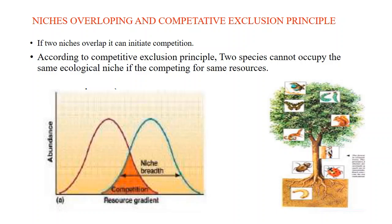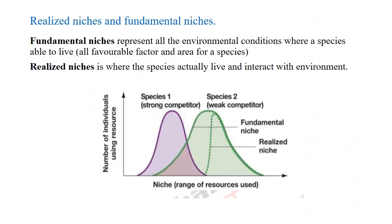Looking at this tree and habitat, there are different organisms at different positions with different ecological niches — on top there are birds, and others are found on the branches and roots. All the ecological niches are different but the habitat is shared.